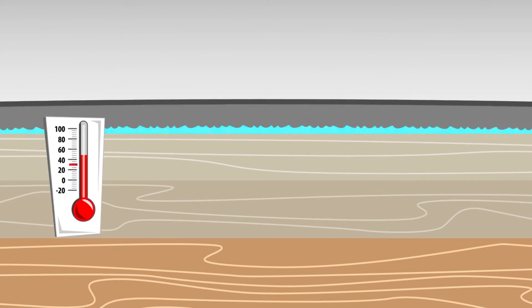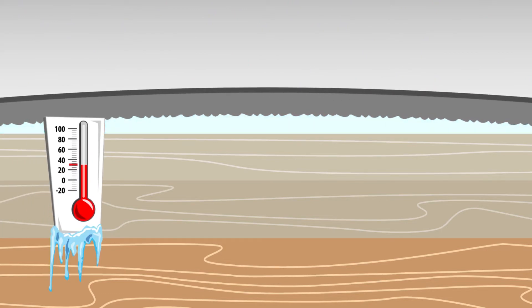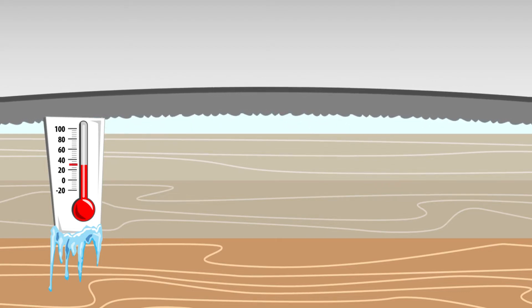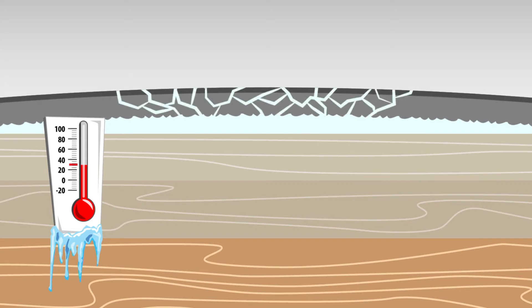When water freezes, it expands, and when it expands, it takes up more space underneath the pavement, and the pavement in itself will expand, bend, and crack, which weakens the material of the pavement.